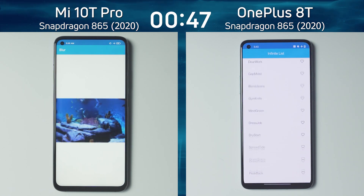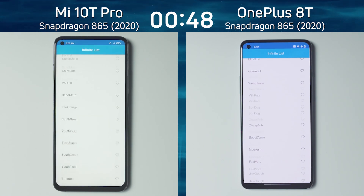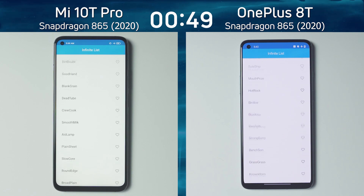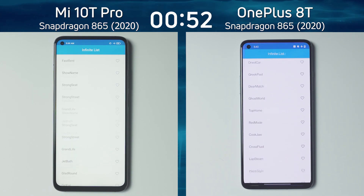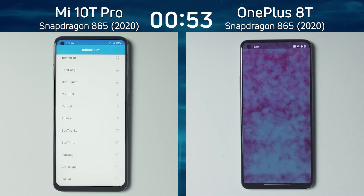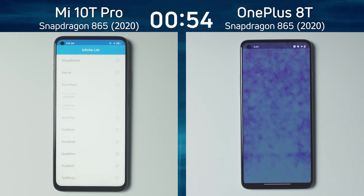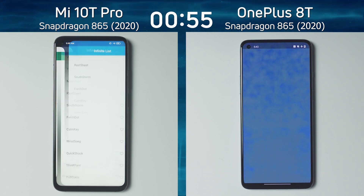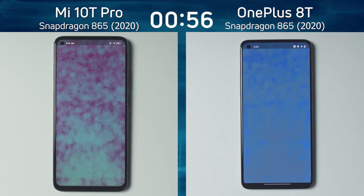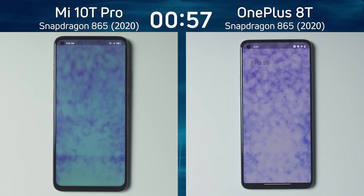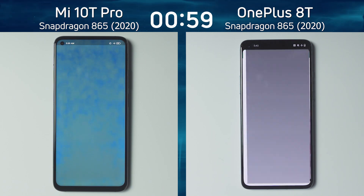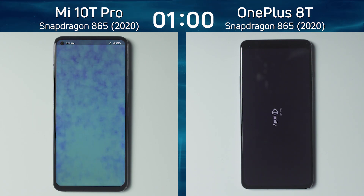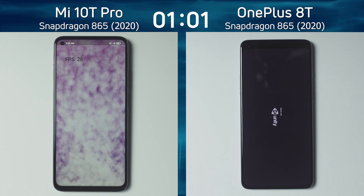It's now into the infinite scrolling list. The lead is definitely being maintained by the OnePlus 8T because the Mi 10T Pro took a long time getting into the infinite scrolling list. Now into the smoke particle test on the right-hand side — 28 frames a second. And on the left-hand side, certainly behind: 26.